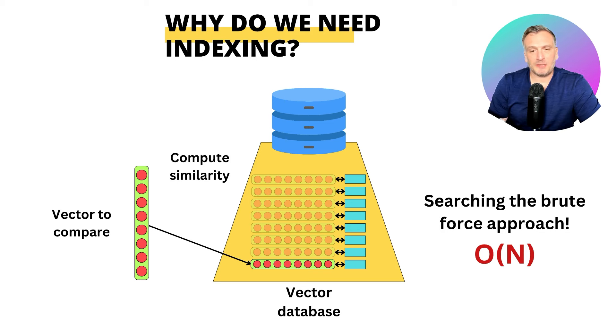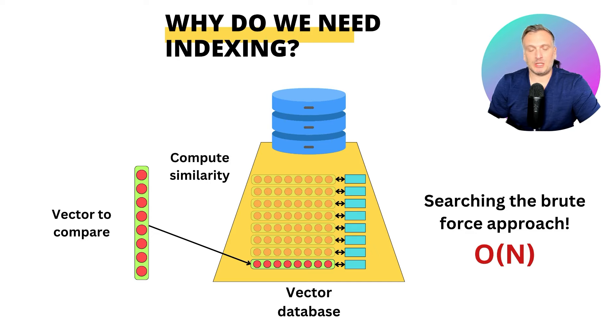Which means that if you had trillions of vectors, you would need to iterate through each of those vectors to compute a similarity metric — that would be way too long. Indexing the data allows you to retrieve the right information quickly, even if you have trillions of vectors.